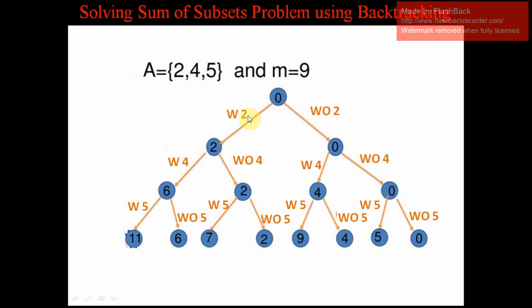The first element is 2. We are going to either consider or not consider the 2 — 'W' stands for 'with 2' and 'WO' stands for 'without 2'. From the root node 0, considering 2 means 0 plus 2, giving us a sum of 2. We complete the left subtree first before moving to the right subtree.